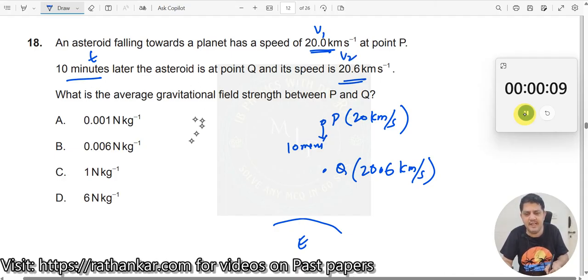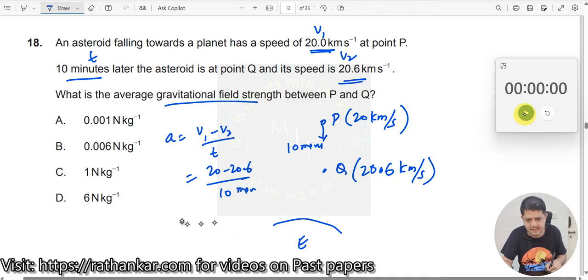You need to find out what is the acceleration, gravitational field strength. Gravitational field strength is nothing but V1 minus V2 divided by T, which should be 20 minus 20.6 divided by 10 seconds, 10 minutes, 10 minutes, right?